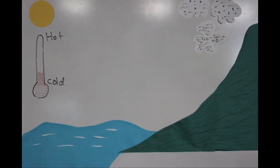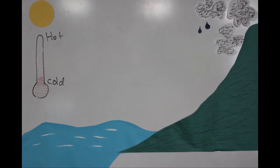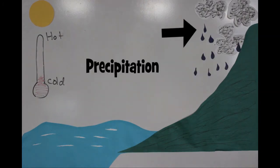When the clouds run into something like a mountain or get colder, they start to rain. This is called precipitation.